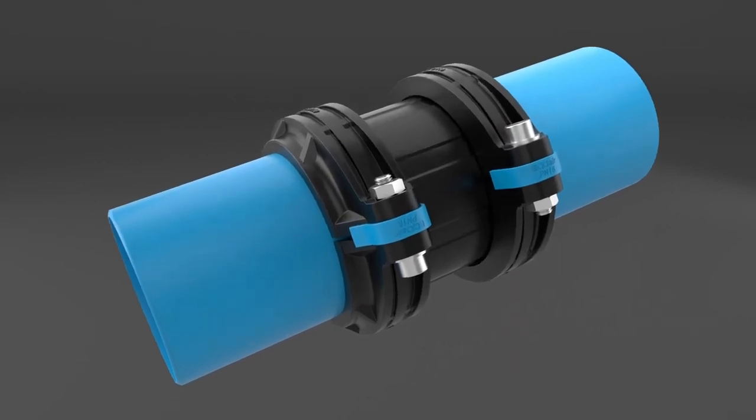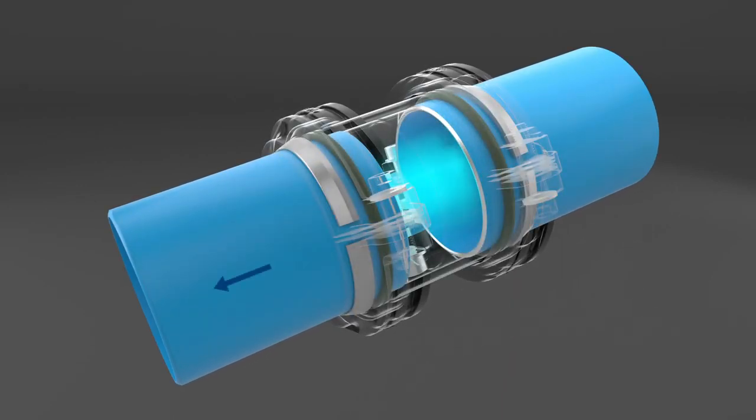By gradually putting the system under pressure, the clamp ring tightens further and cuts into the surface of the pipe. This ensures the fitting cannot slip off.